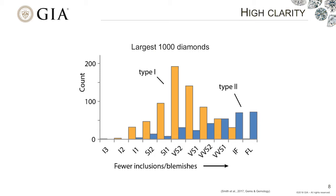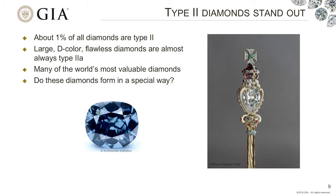Type 2 diamonds stand out in the data and in actual famous samples. Even though only about one to two percent of all diamonds fit into this category of very low nitrogen, it's a very interesting population. A lot of large D color flawless diamonds like the Cullinan are almost always type 2a, and many of the world's most valuable and famous diamonds are type 2a or their cousins type 2b containing some boron, like the Hope Diamond. From an earth science perspective, there have been many questions over the years about whether these diamonds form in a special way.